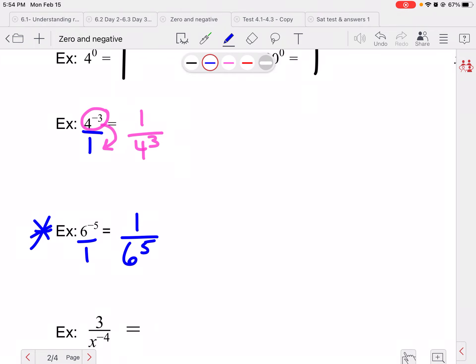This would be, go ahead and try this one. So this is over one. Six has a negative exponent, so it's going to become one over 6 to the fifth.